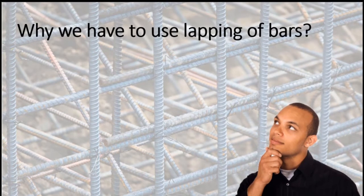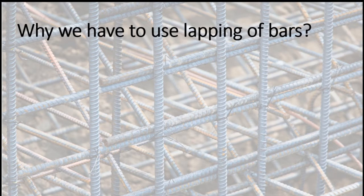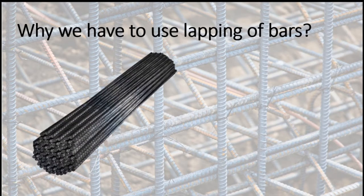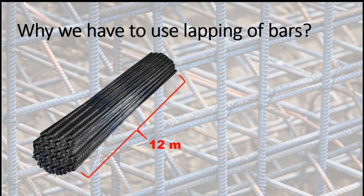Why we have to use lapping of bars? Usually in industry we can find 12 meters long bars. If we have a slab, beam or column more than 12 meters long, we should have a way of providing reinforcement. In such cases we can use two steel bars by lapping each other.